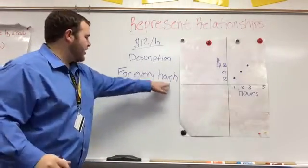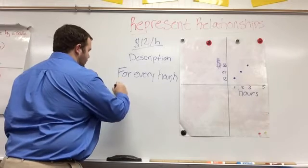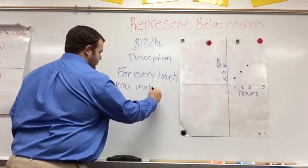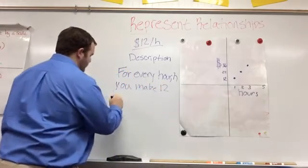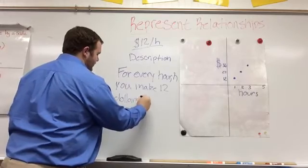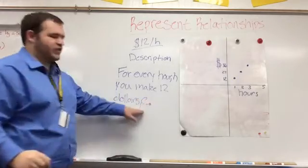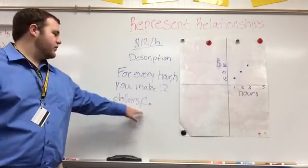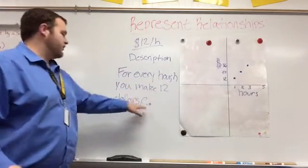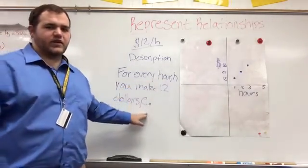The way we want to use in our table, for every hour H, you make $12 C because that's what we chose to represent our Y values. So our description would be for every hour H, you make $12, C because that's our variable.